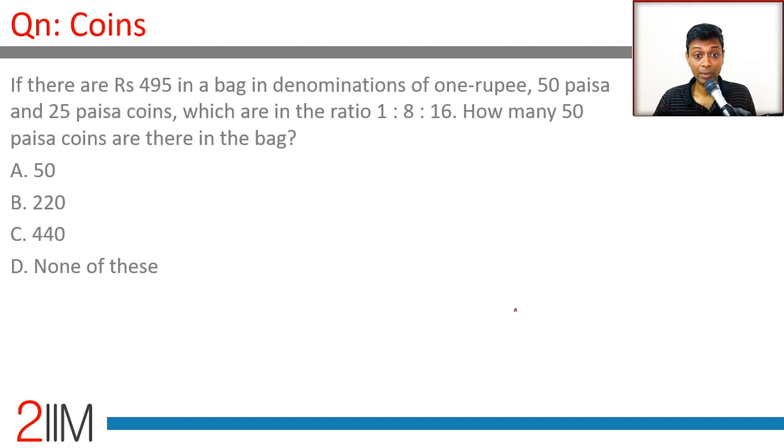If there are Rs 495 in a bag in denominations of 1 rupee, 50p, and 25p coins which are in the ratio 1:8:16, how many 50p coins are there? So there are x coins of 1 rupee type, 8x of 50p, and 16x of 25p.